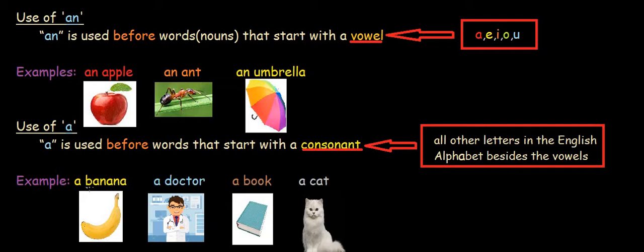So, consonants are all the other letters we find in the English alphabet besides the vowels. For an example, banana, it starts with b, which is a consonant. So, we can include a before banana.